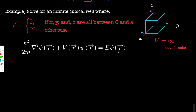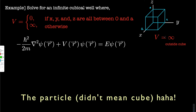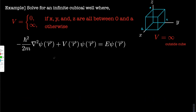Now to start the actual video: we have a potential cube. We solve for an infinite cubic well where V equals zero when X, Y, and Z are between zero and A; otherwise V is infinity. So outside this box, psi is going to be zero and we don't have to worry about it. Let's now start working on inside the cube.